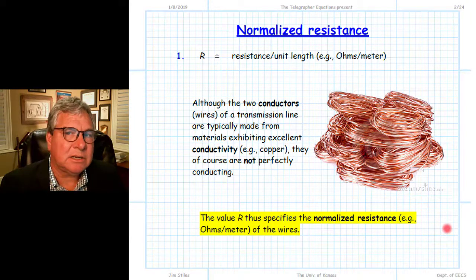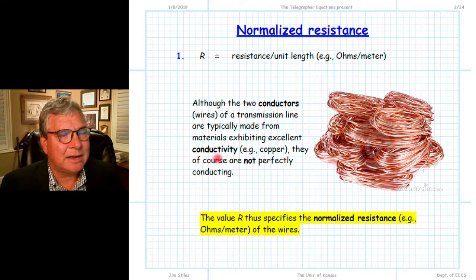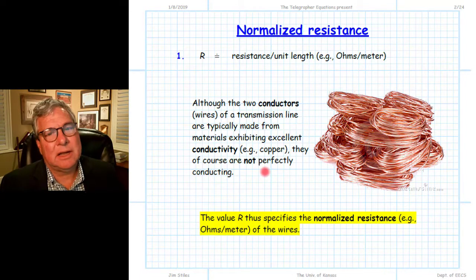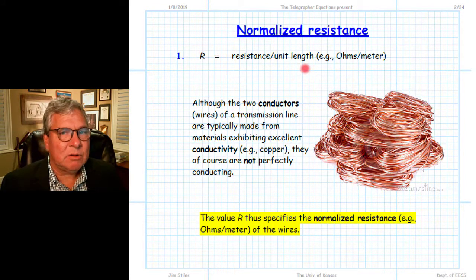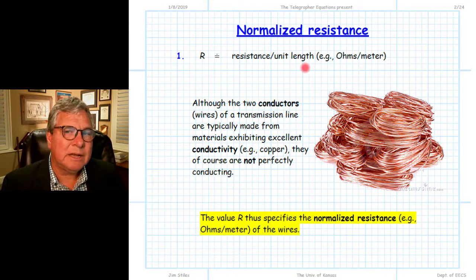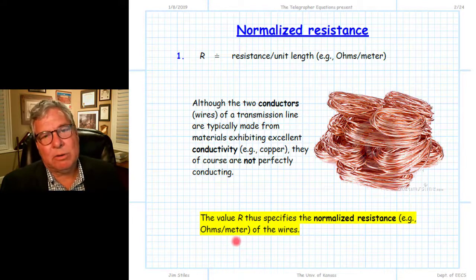The first real parameter used to characterize a transmission line is normalized resistance. The two conductors — the two wires — are generally made of materials with excellent conductivity, like copper. They're not perfectly conducting, but they're highly conducting, so their resistance is very low. We characterize this as resistance per unit length — ohms per meter or ohms per centimeter. This R is our normalized resistance, normalized to unit length.